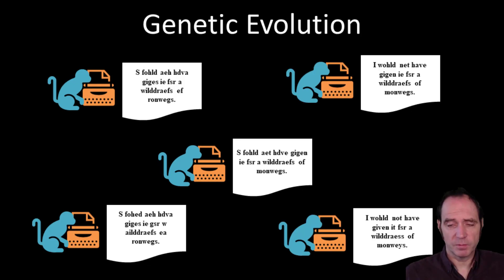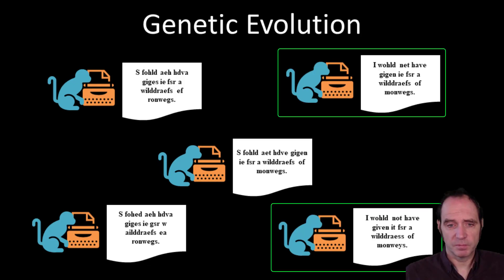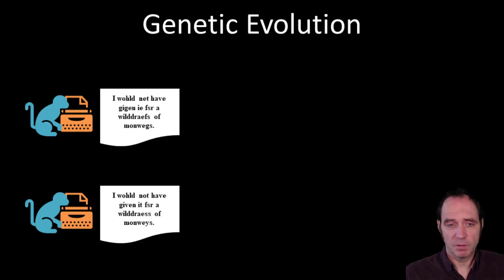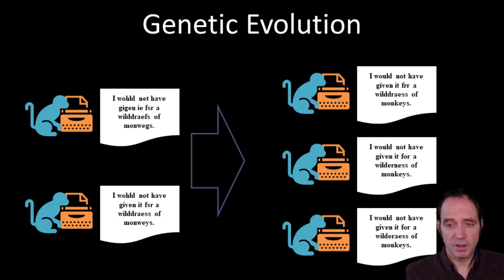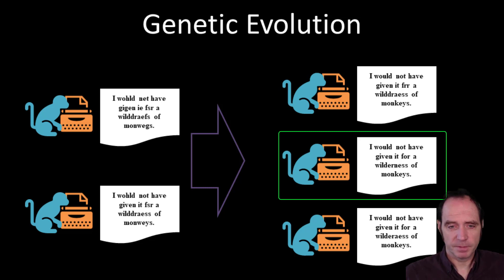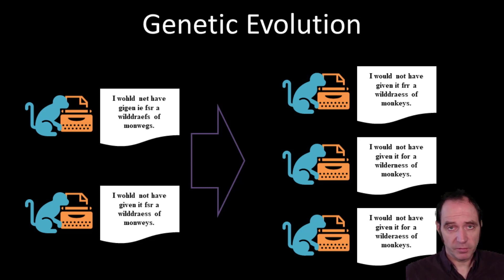Supposing we had a finite number of monkeys — we could identify the monkeys getting closest to writing Shakespeare, then crossbreed and evolve those monkeys, and eventually through evolution we would have a monkey that could write Shakespeare. Well, in theory anyway. It's a lot easier to get this to work with numbers rather than monkeys.